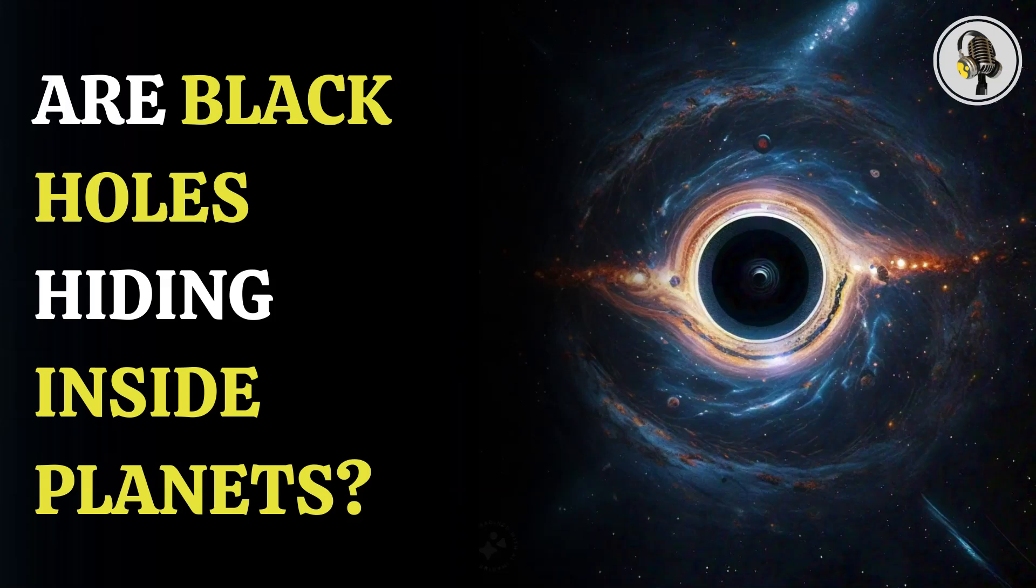Presently, scientists consider PBH as dark matter. It is a likely source of primordial gravitational waves. According to recent research, small PBH are likely present in the interiors of main sequence neutron and dwarf stars and are slowly consuming their gas supply.